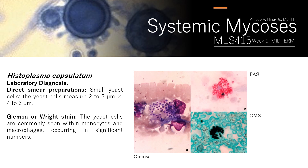For direct smear preparations, small yeast cells of 2 to 3 by 4 to 5 micrometers are observed. Using Giemsa stain, cells are commonly seen within monocytes and macrophages. With Giemsa stain, the background is pink to purple, and the fungal elements appear purple-blue with a clear halo or capsule, consistent with what we learned about laboratory diagnosis staining characteristics.